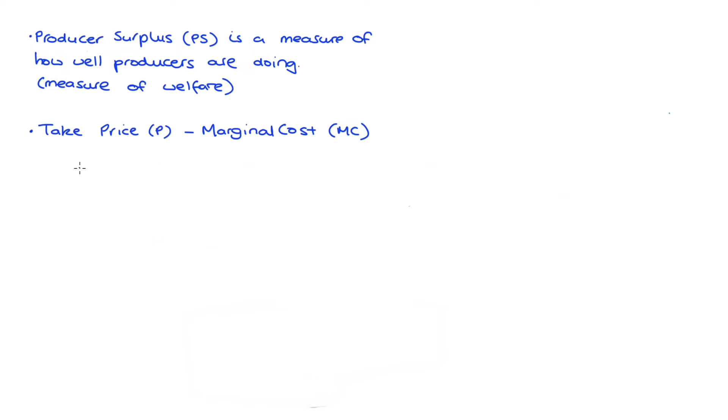That's P, and the marginal cost of production, abbreviated MC, for each unit sold.